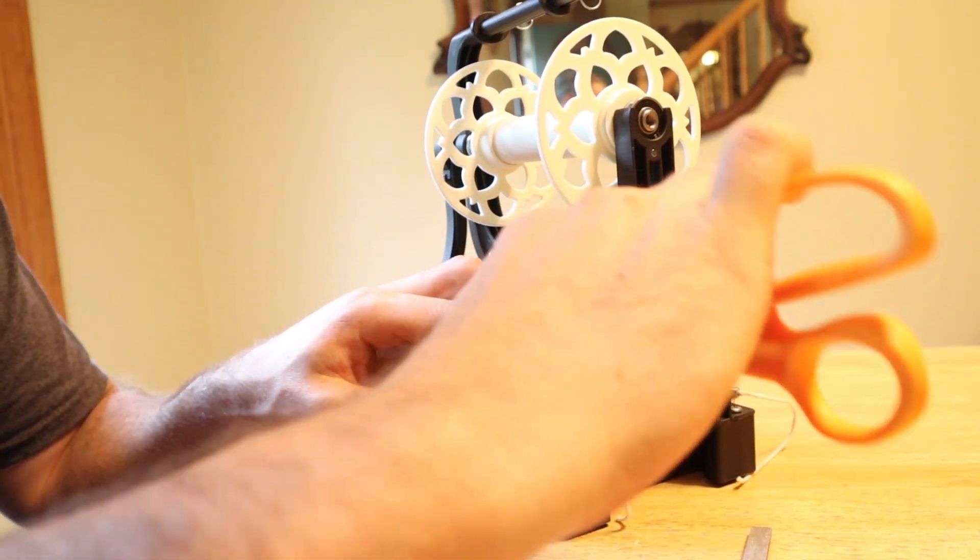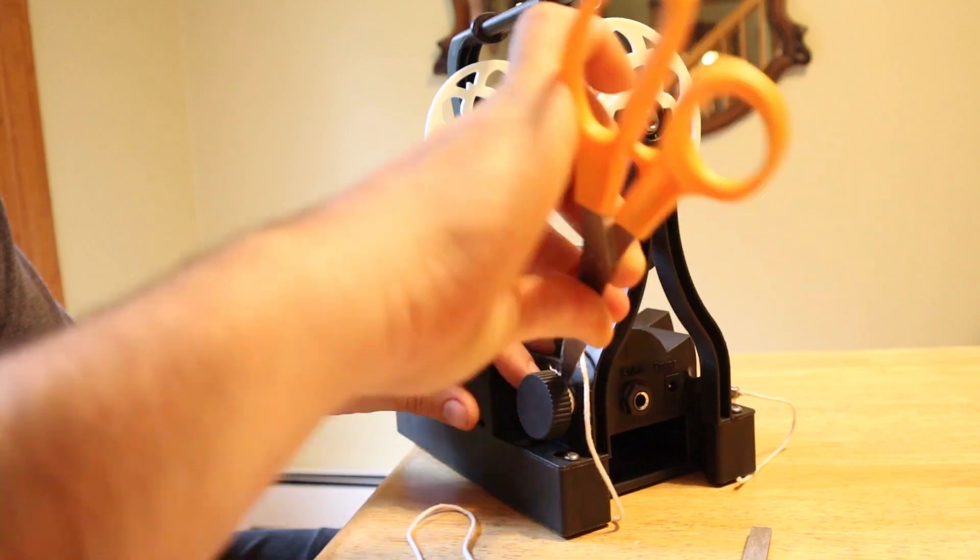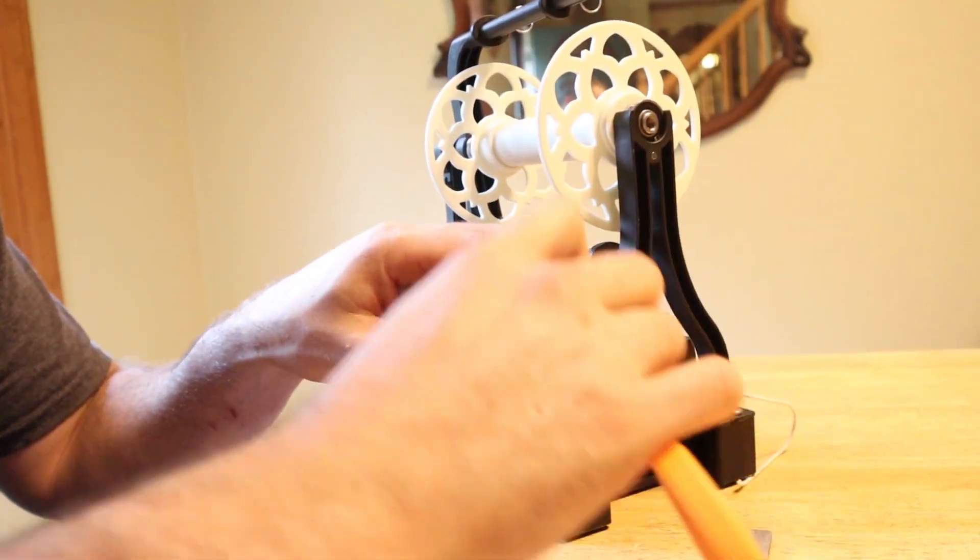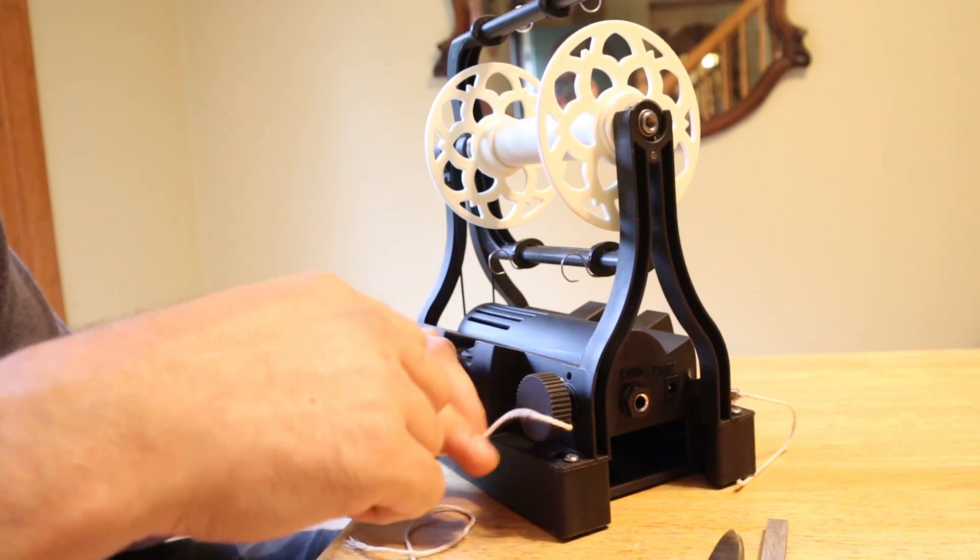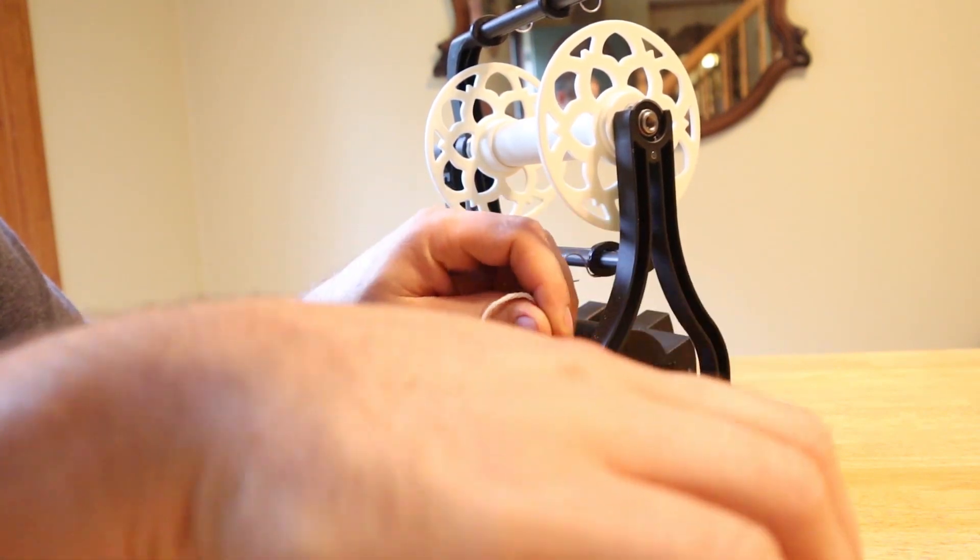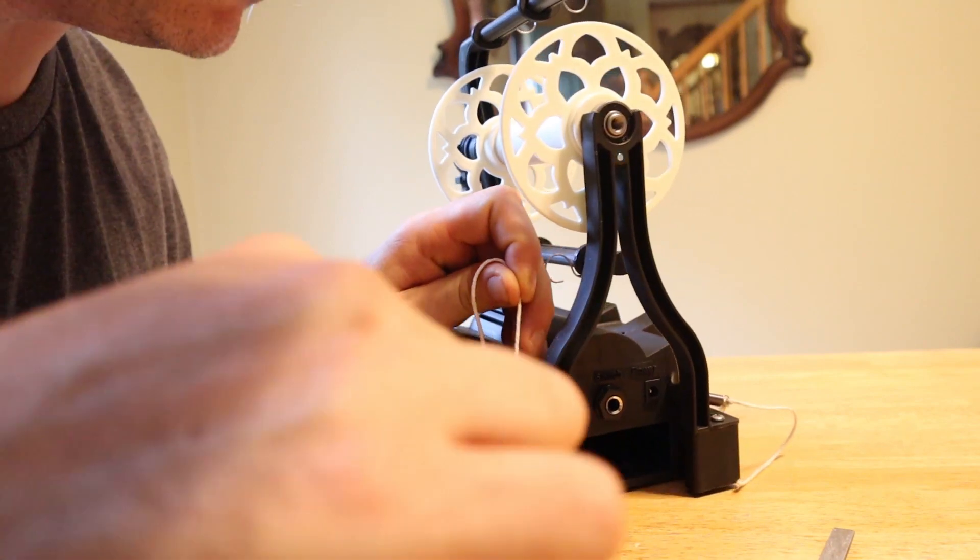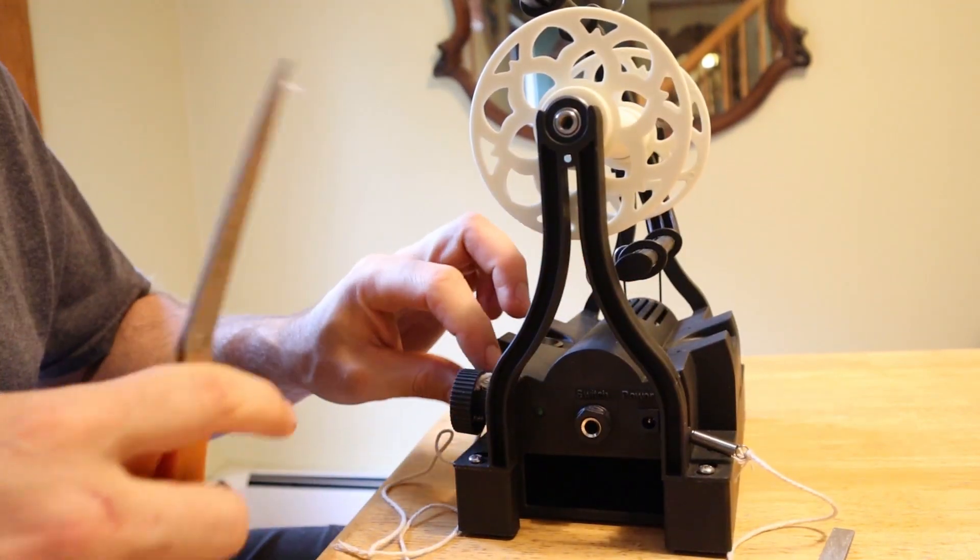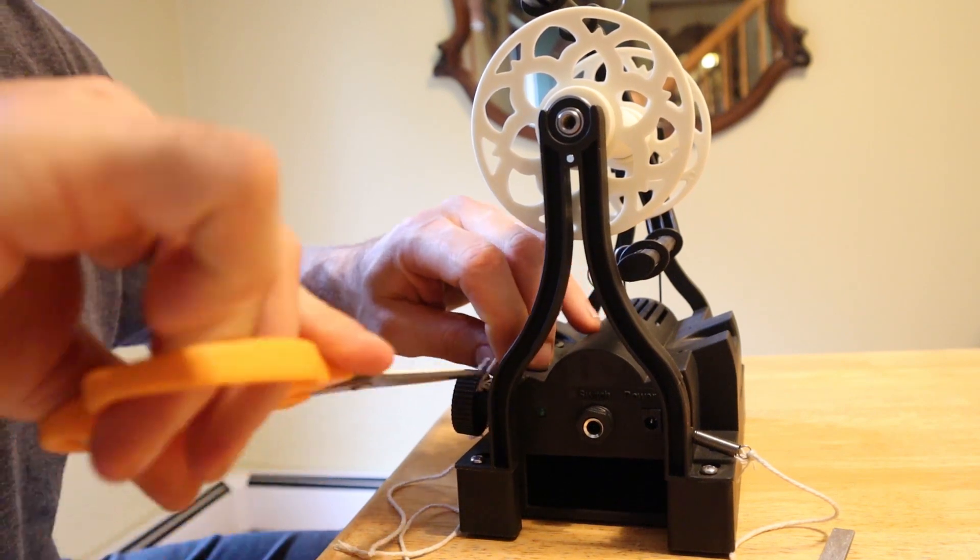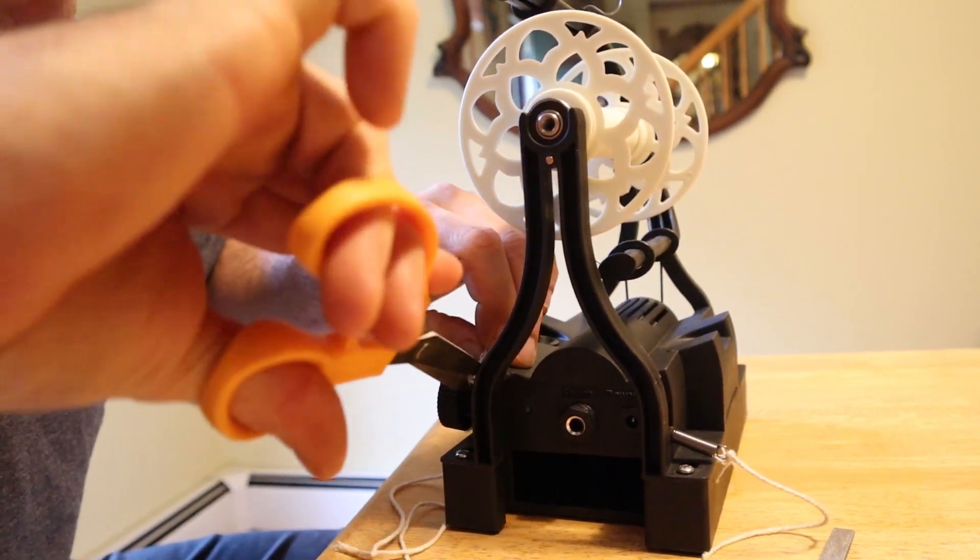So all you need to do to replace the string is get it out of this little hole here and then unwind it and then just cut it off of this dial. There's no need to unscrew the dial. You just want to get in there and cut it.